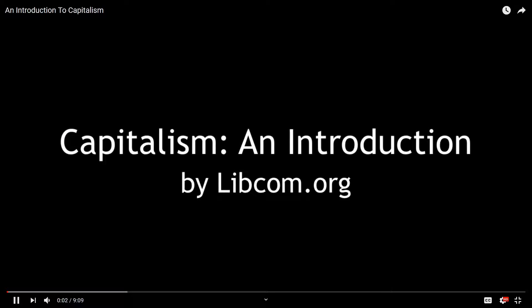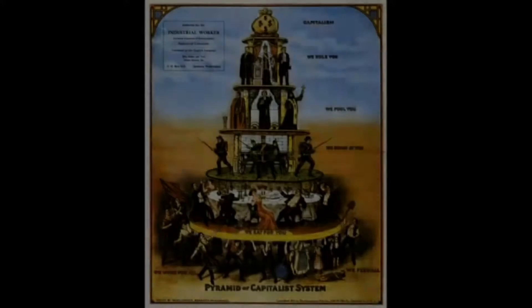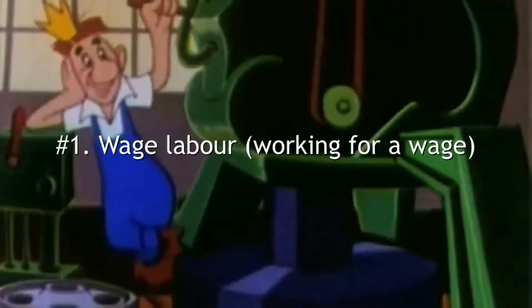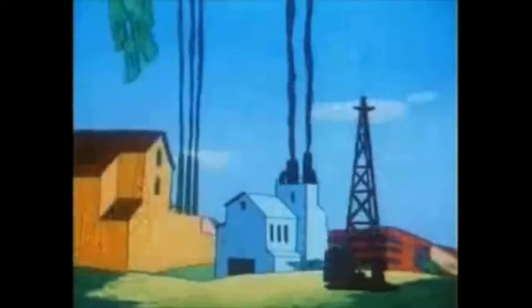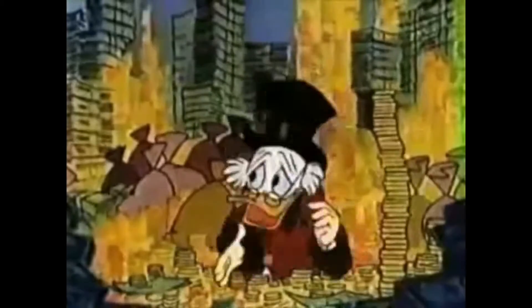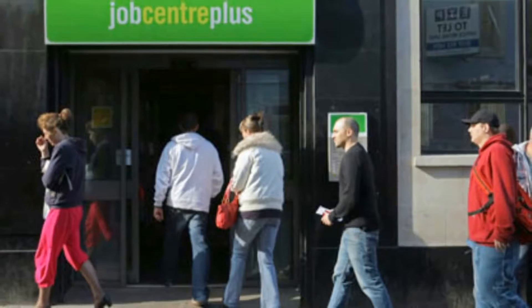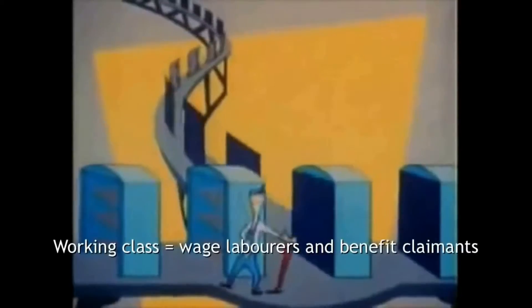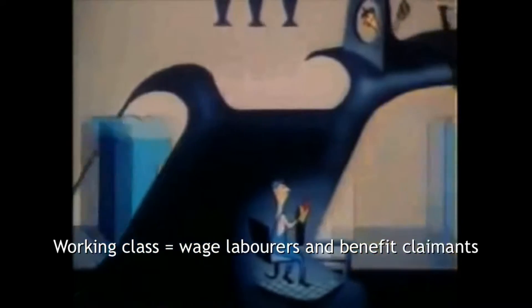Capitalism, an introduction by libcom.org. At its root capitalism is an economic system based on three things: wage labor, working for a wage; private ownership or control of the means of production, things like factories, machinery, farms and offices; and production for exchange and profit. While some people own means of production or capital, most of us don't, and so to survive we need to sell our ability to work in return for a wage or else scrape by on benefits. This first group of people is the capitalist class or bourgeoisie in Marxist jargon, and the second group is the working class or proletariat.